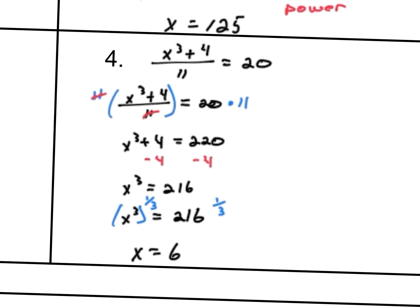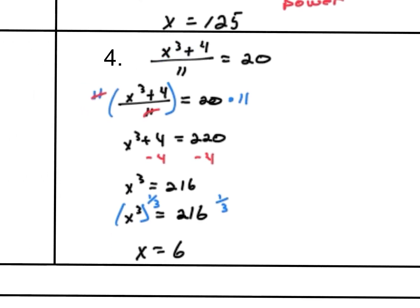Number four: we have x cubed plus four, all divided by 11, equals four. The first thing to address is that everything is being divided by 11, so we multiply both sides by 11 — the 11s cancel on the left, leaving x cubed plus four. On the right, we get 220. To isolate x cubed, we subtract four, giving 220 minus four equals 216. Now x cubed equals 216, which is the cube root of 216. Raising x to the third to the reciprocal power of one-third gives x equals 216 to the one-third. The cube root of 216 is six.